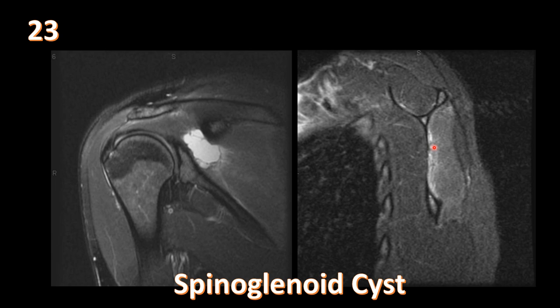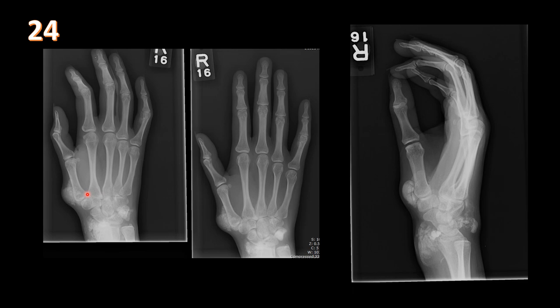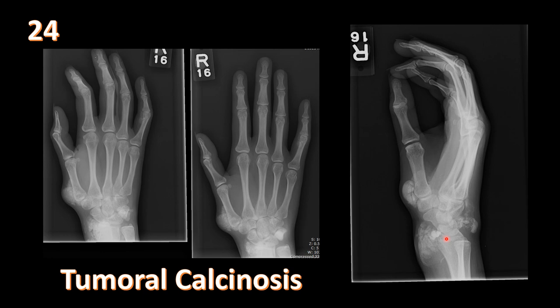Three views of the hand show clumped calcifications around the wrist joints. This is tumoral calcinosis, in the differential diagnosis of soft tissue calcifications. It typically occurs in young African-American patients, around articulations, and is idiopathic. The periarticular location and patient demographics favor tumoral calcinosis.